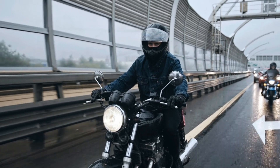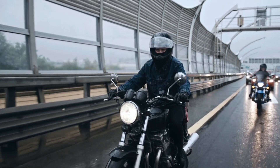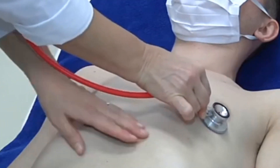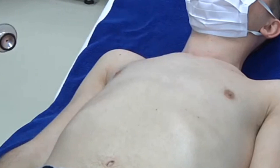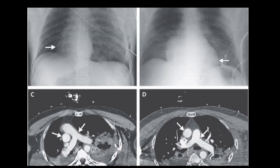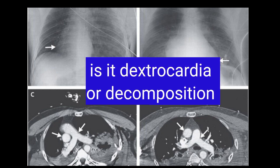However, dextrocardia isn't always congenital. Remember the Italian man mentioned at the beginning? He was involved in a motorcycle accident and was rushed to hospital, where doctors noticed unusual symptoms — they couldn't feel his heartbeat on the left side. The heart had shifted to the right side. He was not born this way; prior to the accident, his heart was correctly positioned on the left.